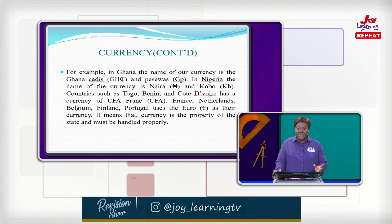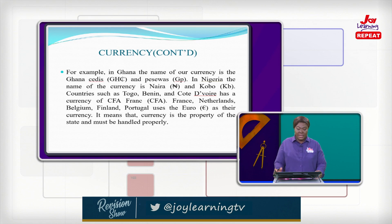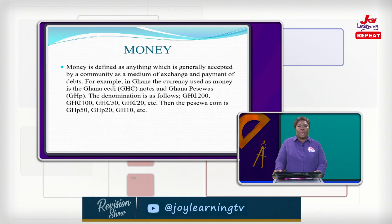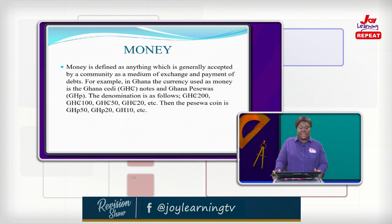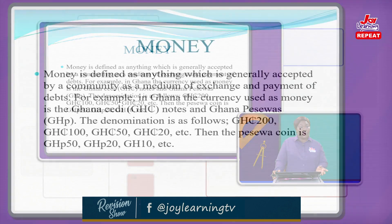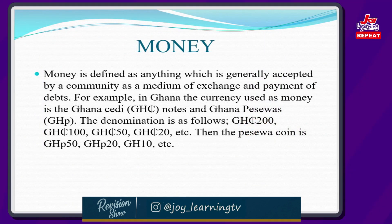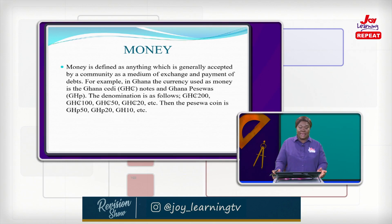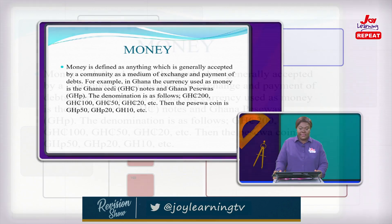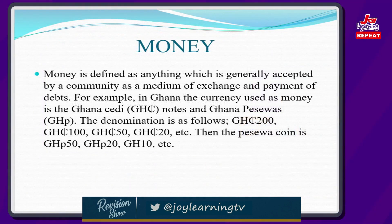Currency is the property of the state and must be handled properly. Now we move on to money. We have just explained what a currency is. Money is defined as anything which is generally accepted by a community as a medium of exchange and payment of debts.